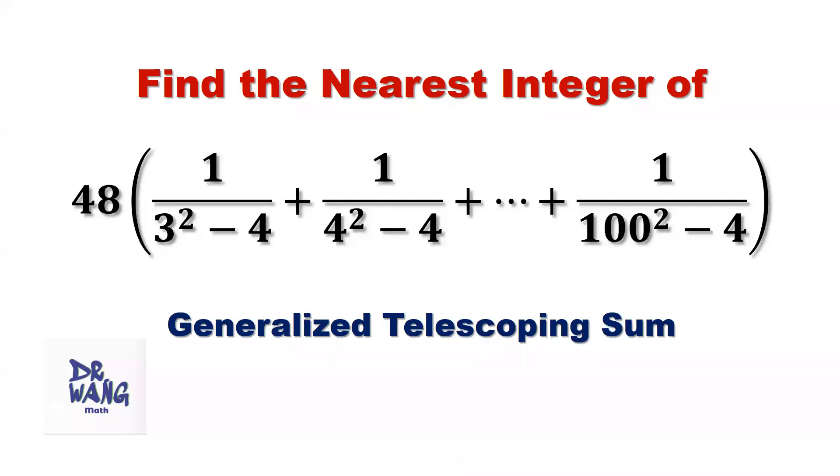Hello, everyone. I'm Dr. Wen. Here is the question. Find the nearest integer of 48 times 1 over 3 squared minus 4 plus 1 over 4 squared minus 4 plus until 1 over 100 squared minus 4.